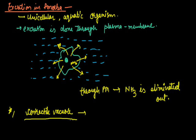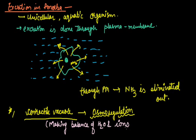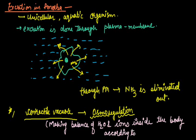Ammonia is eliminated out of the body. There is a specialized structure known as the contractile vacuole. This contractile vacuole is responsible for osmoregulation. The meaning of this term is making balance of water and ions inside the body according to the outer environment. It maintains the balance of water and ions inside a living organism according to its outer environment. This is osmoregulation.